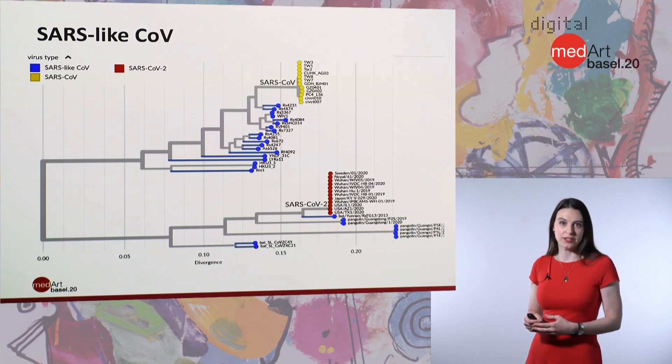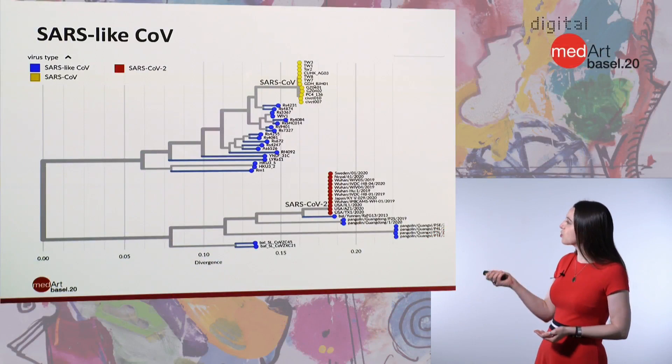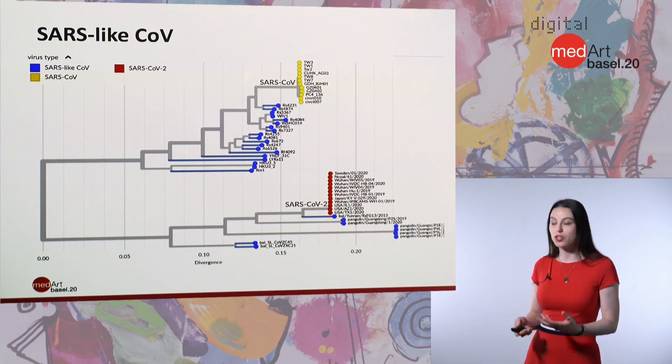These SARS-like coronaviruses have been sampled from animals and are very similar to the two SARS viruses that have infected humans, but not identical. This shows that both SARS-1 and SARS-2 are jumps from animals into humans. We can see that the most closely related sample is one from a bat, though it's not identical to what's circulating now in humans.